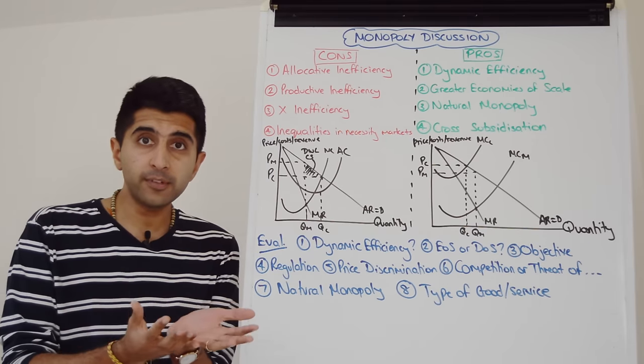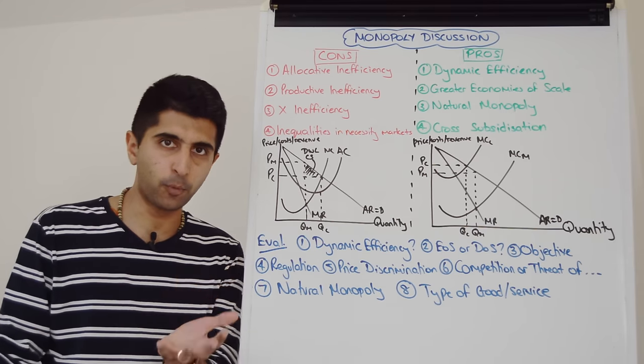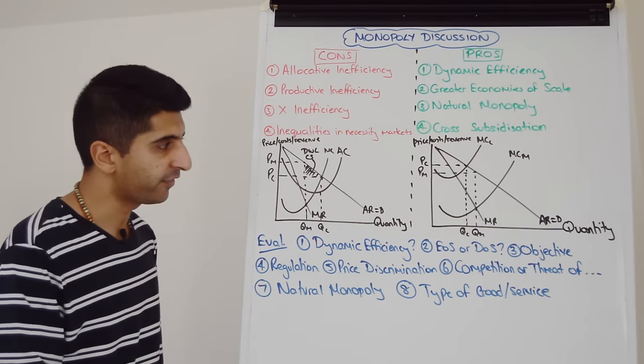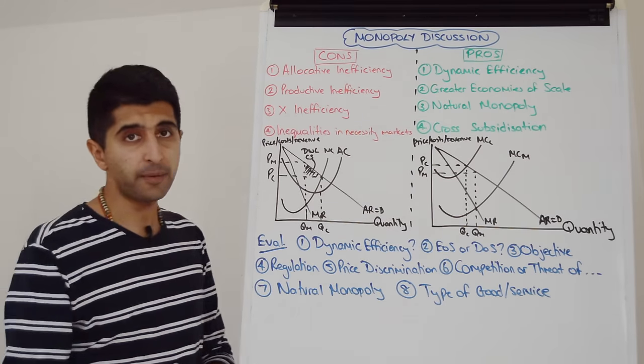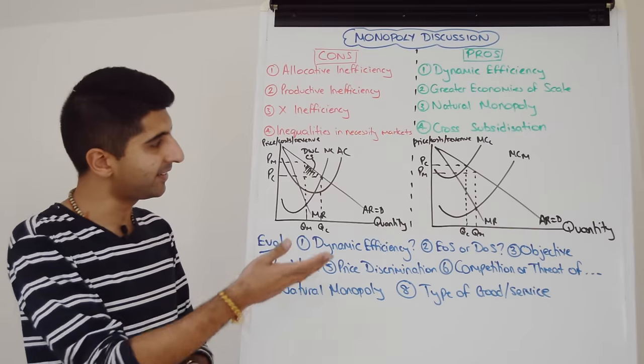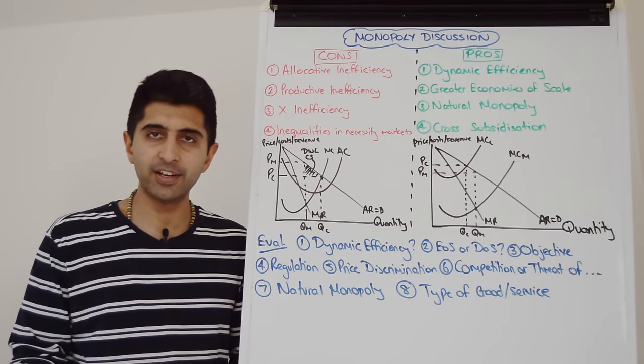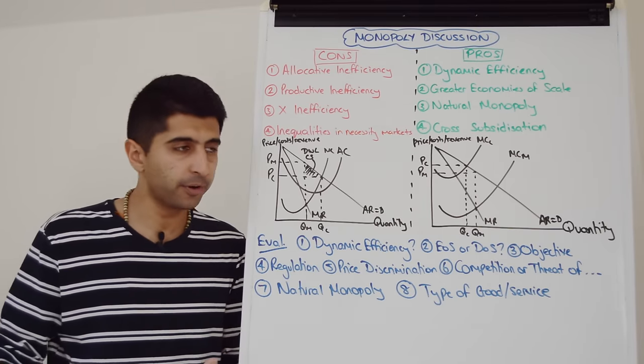Of course we need to question economies of scale or diseconomies of scale more likely, depends on the size of the firm. What's the objective of the monopolist? We assume it's profit max in all of our analysis and that leads us to outcomes of allocative inefficiency and price exploitation restriction of output.